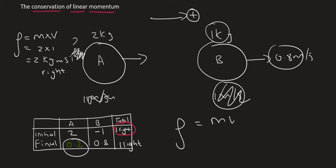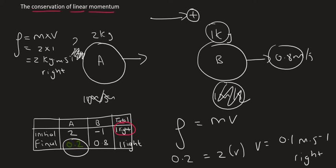We know that momentum is equal to mass times velocity. We know that object A has a momentum of 0.2, its mass is 2 kilograms, and we can then work out its velocity. What we would find is that its velocity is going to be 0.1 meters per second to the right.